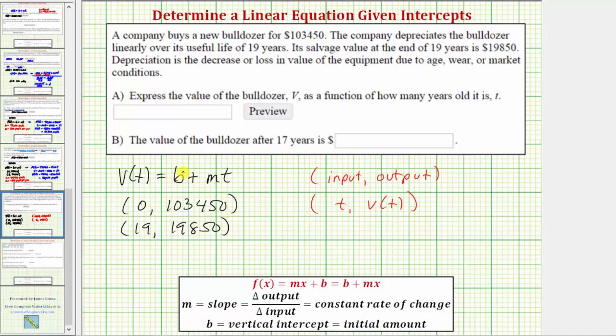Now, let's determine the value of b, where again, b is the initial or starting amount, which in this case is the cost of the new bulldozer. b is equal to $103,450. The value of b is always the function value when the input is zero.